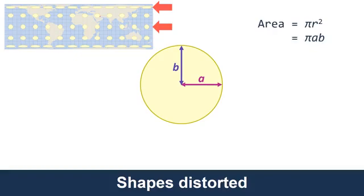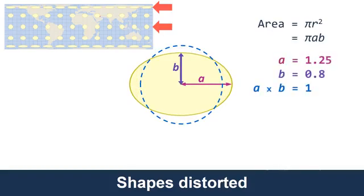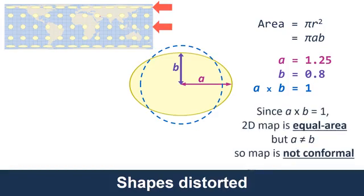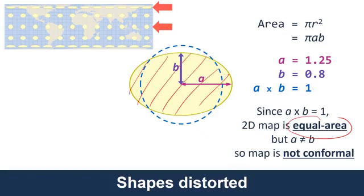Using the same formula for area, what's happening is that our circles are being distorted. Now A is greater than 1 and B is less than 1, but A times B still equals 1. The significance of that is that since A times B still equals 1, this map is equal area — the area of the distorted ellipse is the same as the area of the original circle. That indicates that the sizes of objects on the reference globe will be the same size on our projected version. The shape will be different, but the sizes will be correct.